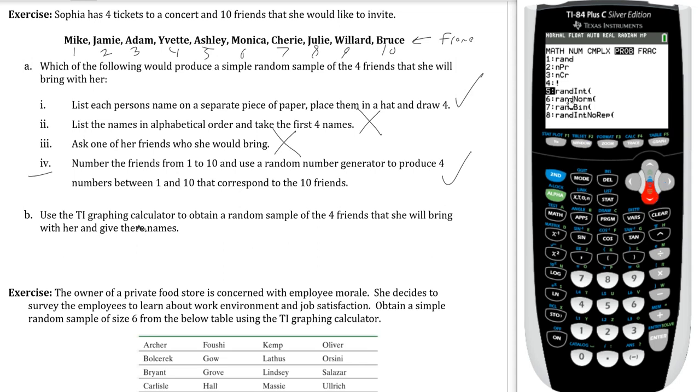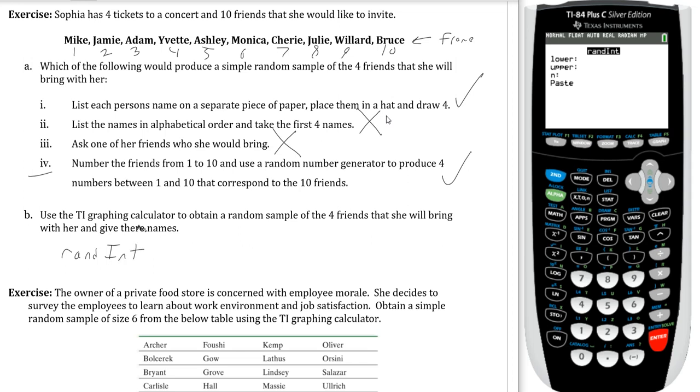So I'm going to arrow down until my cursor is on the fifth option here. Once I'm on rand int, I want to hit enter. Now once I hit enter, there's going to be one of two things you see. Some calculators will see the screen that I have right here where it says lower colon, upper colon, n colon, paste. Some calculators don't see this. Other calculators would see just rand int parentheses, and you're probably on the main screen.